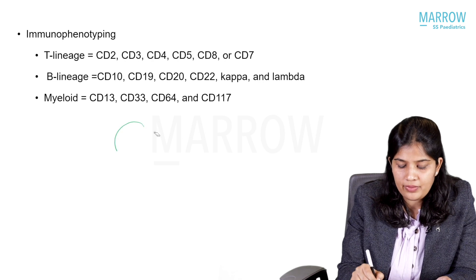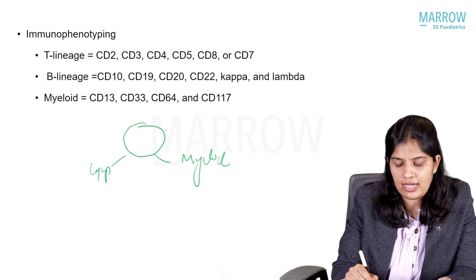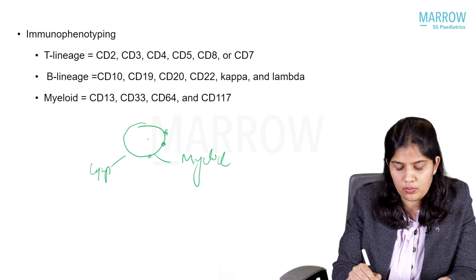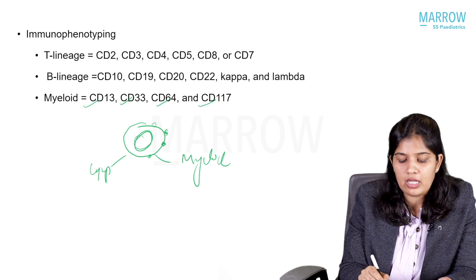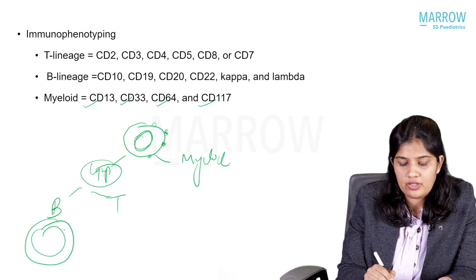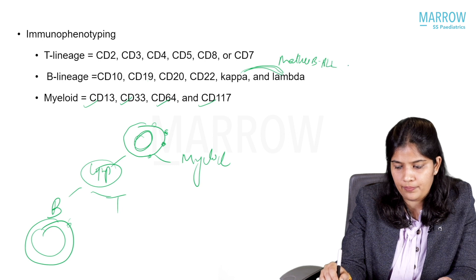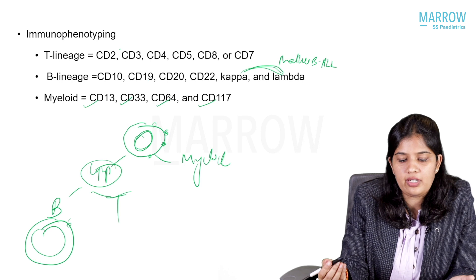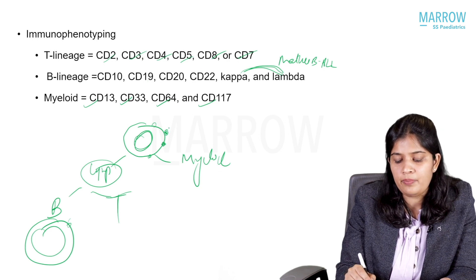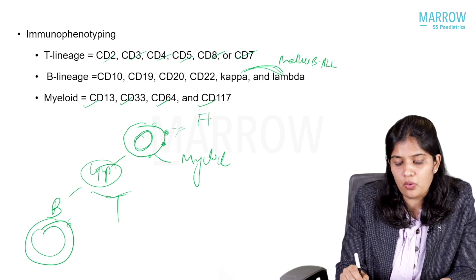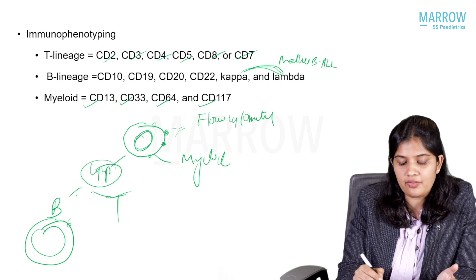To characterize a blast as lymphoid or myeloid, we look at certain antigens present on the cell surface or cytoplasm. In myeloid blasts, CD13, CD33, CD64, and CD117 are generally present. In B-lymphoid blasts, CD10, CD19, CD20, and CD22 are present; kappa and lambda are mainly seen in mature B-ALL. In T-lineage blasts, markers include CD2, CD3, CD4, CD5, CD8, or CD7. These antigens are detected using antibodies via a technique called flow cytometry — this is how we immunophenotype cancer cells into different lineages.